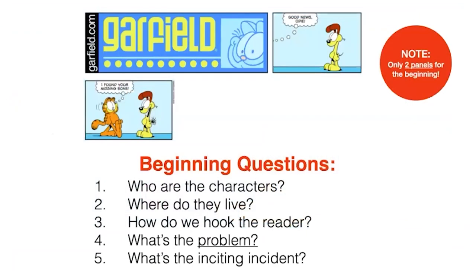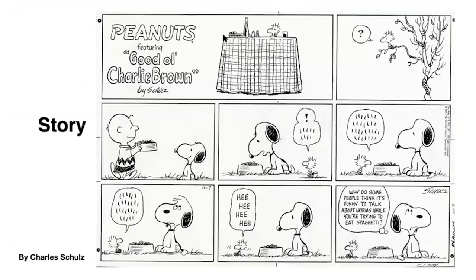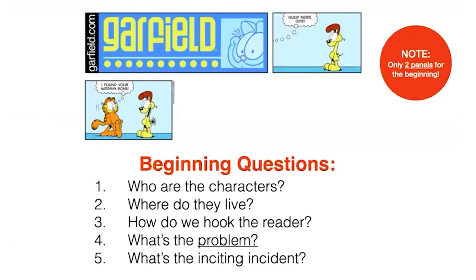Let's look at how we established the characters in the beginning. The problem is that Odie is missing his bone, and the hook is 'Good news, I found your bone.' In comics, the middle can be done very fast — just one or two frames. In the Peanuts comic the setup and hook are right there — just a question mark in one frame. In the Garfield comic the hook is in the very first panel: 'Good news' — what is the good news? And then the problem is introduced: 'I found your missing bone.'